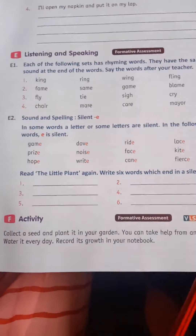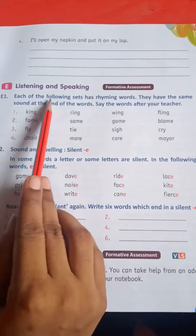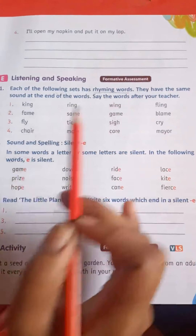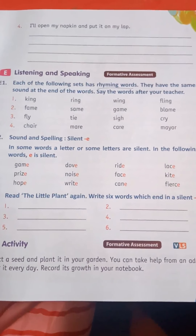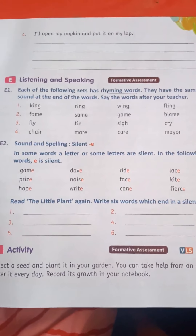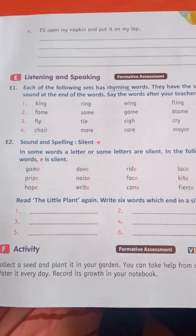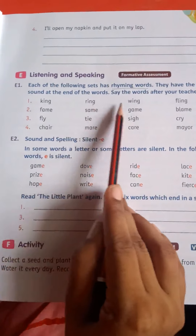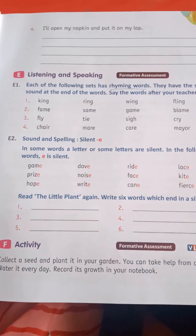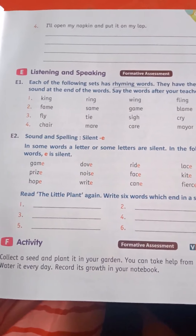Now come on page number 5. Here are some words given to you. Each of the following sets has rhyming words. What is rhyming words? Same kind of words — their spellings are different but their rhyme, bolne ka jo lahja hai, woh ek jaisa hota hai, ek jaisi sound karte hain. For example: king, ring, wing, fling — ing-ing ki ek jaisi awaaz aa rahi hai. Ise hum bolte hain rhyme, aur jo words ek jaise hote hain unko bolte hain rhyming words.